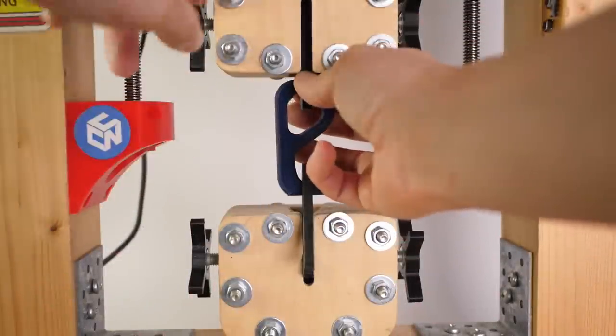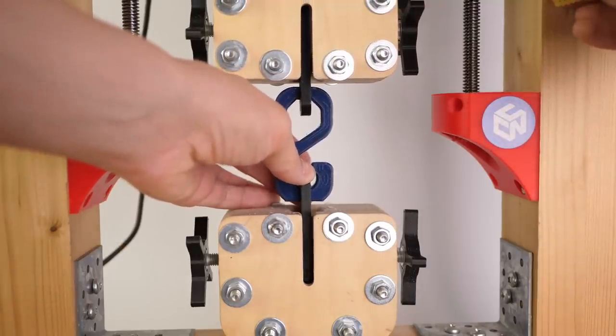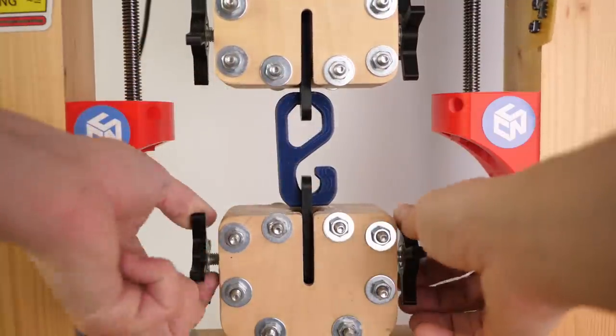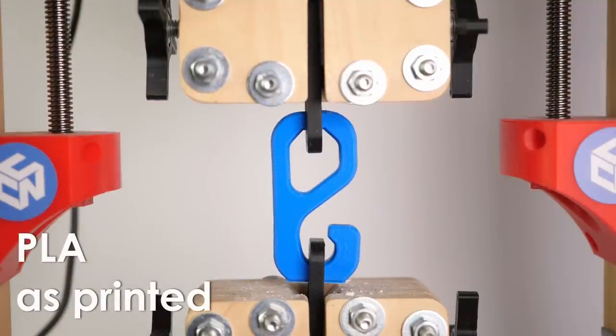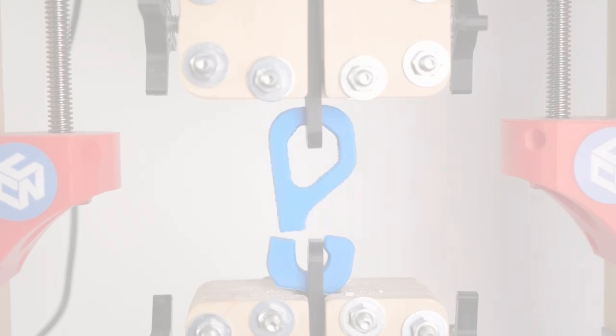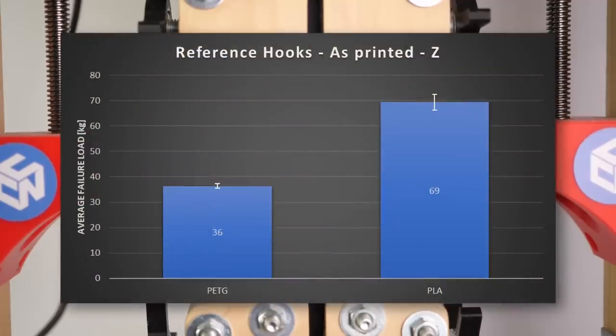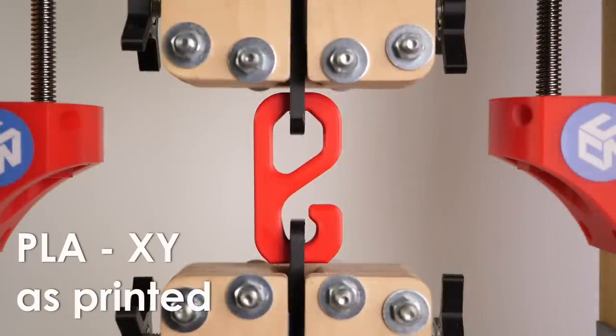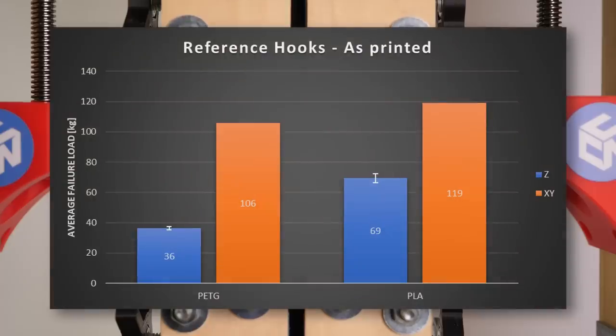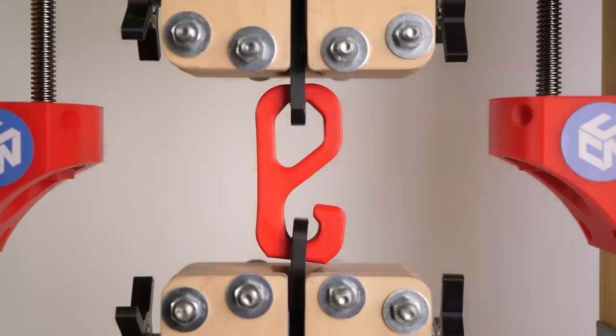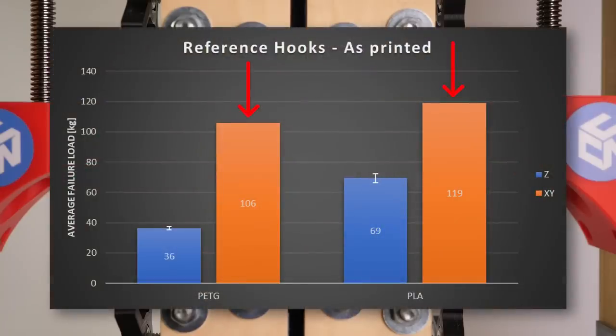But now let's see how the strength of the material really changed. I tested all samples on my DIY universal test machine to increase repeatability. Let's start with the reference hooks that were not treated in any way. First the ones printed standing to test layer adhesion. The PLA ones failed on average at 69 kg of load. PETG was significantly weaker and failed at only 36 kg. In their ideal lying printing orientation, they are, of course, significantly stronger and PETG failed at 106 kg, PLA even at a whopping 119 kg.